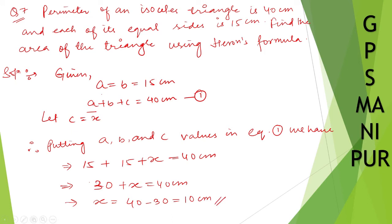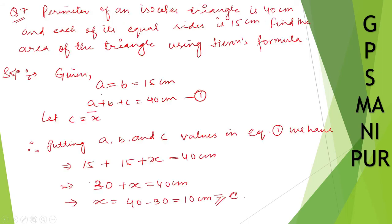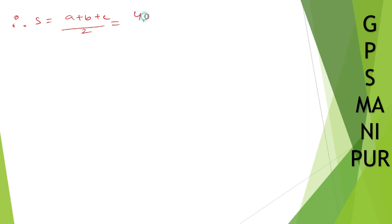Now let us find s. Therefore s is equal to a plus b plus c divided by 2. What is a plus b plus c? It is already given as 40, so 40 divided by 2 equals 20 centimeters.